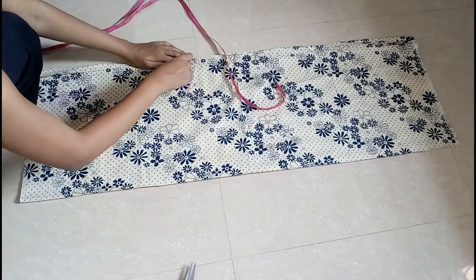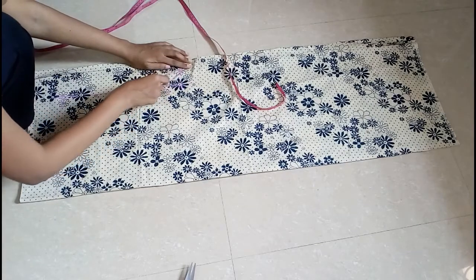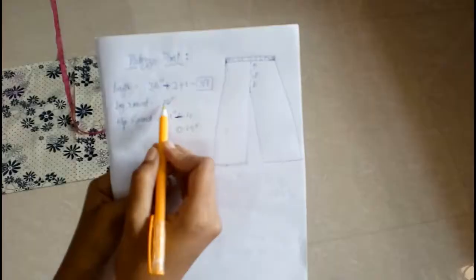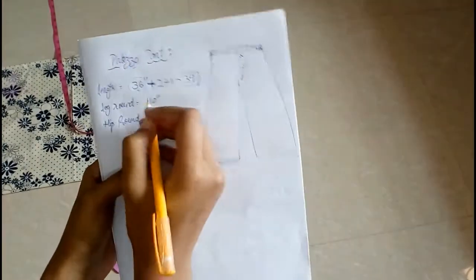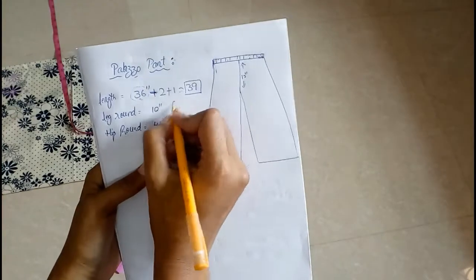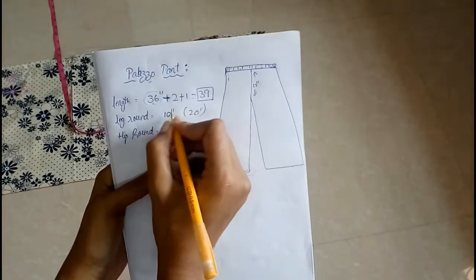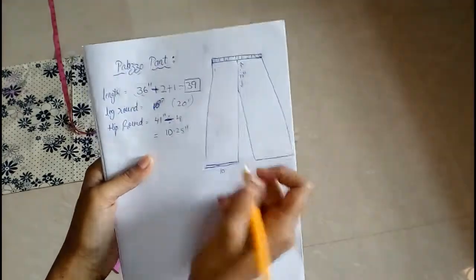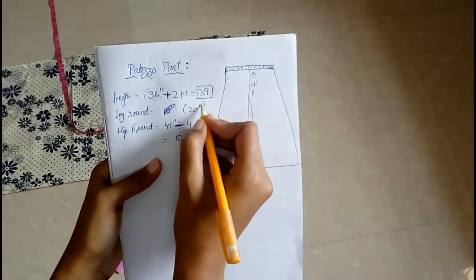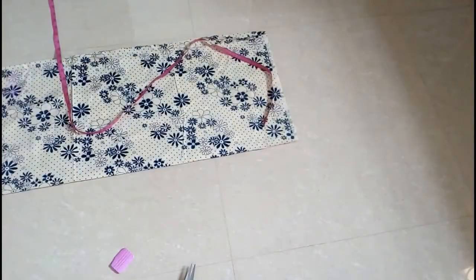Now just give it a curve. This 10 inches is only like this, not the full round. Actually the total leg round should be 20 inches. I have just halved it. I mean only this side we have to mark 10, so the total round will be 20 inches.